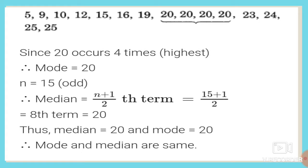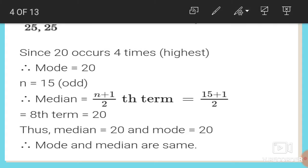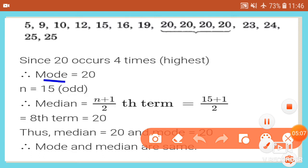In the data, 20 appears 4 times — the highest frequency — so our mode is 20. We write: 20 occurs 4 times, which is the highest number of occurrences, so the answer for mode is 20.